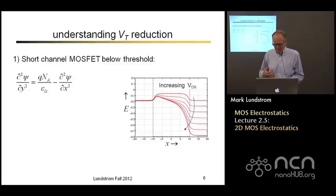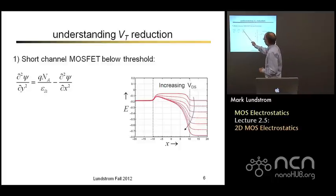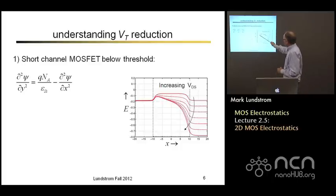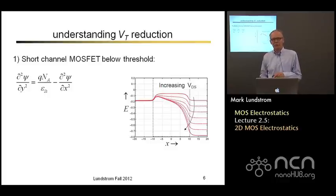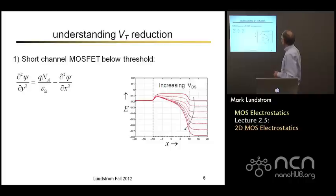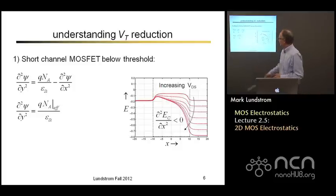We can always just solve this problem numerically, but our goal here is to try to get insight, so we'll look at this in a few different ways. Here's one way: if I move the del squared psi dx squared from the left-hand side over to the right-hand side, I'll get an equation that looks like that. If I draw my energy band diagram — and that's actually a numerically computed one — you'll see that the curvature of the conduction band is negative. The conduction band goes down when the electrostatic potential goes up, meaning the curvature of the potential is positive. So I can think of the right-hand side as now being an effective doping density that's lighter than the actual doping density due to this second term.